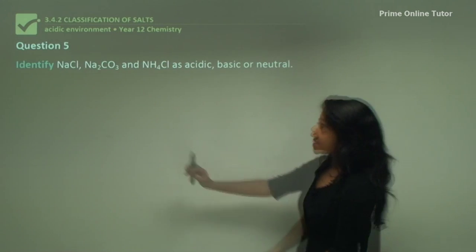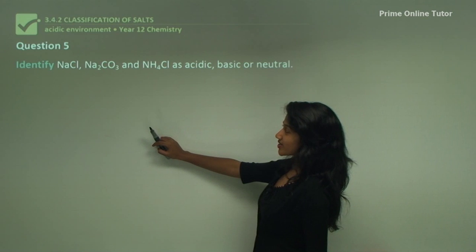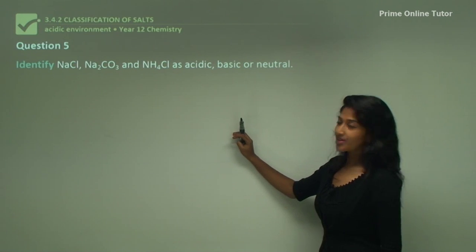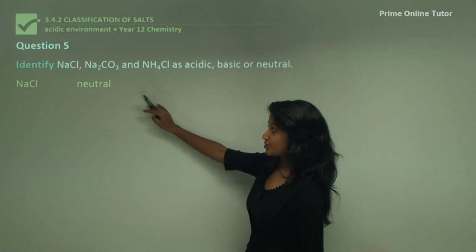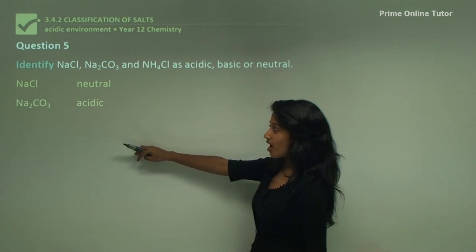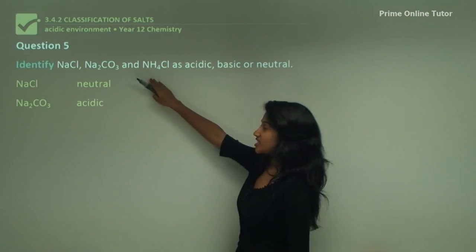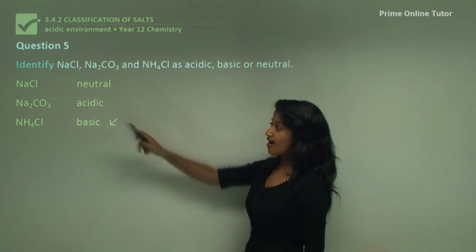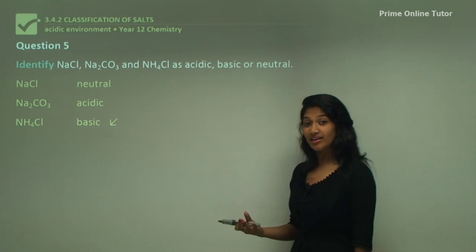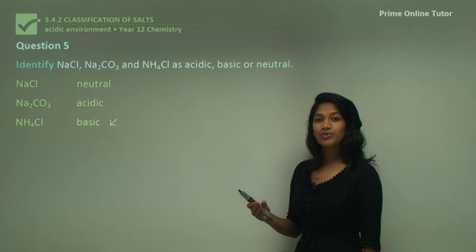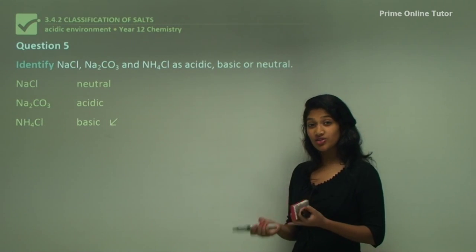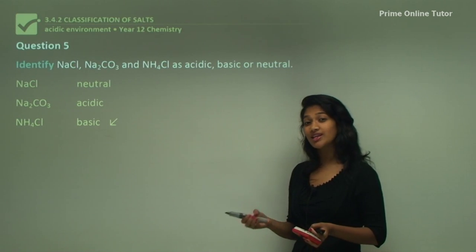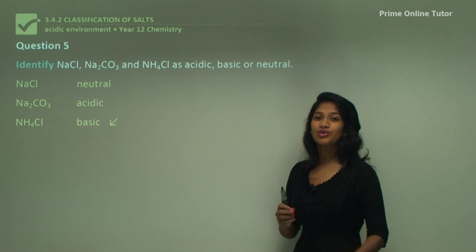Question 5: identify sodium chloride, sodium carbonate, and ammonium chloride as either acidic, basic, or neutral. Sodium chloride is neutral, sodium carbonate is basic, and ammonium chloride is acidic. That wraps up our lesson today — we learned about salts, their classification as acidic, basic, or neutral, and linked Bronsted-Lowry's theory of acids and bases to the acidity of salts.